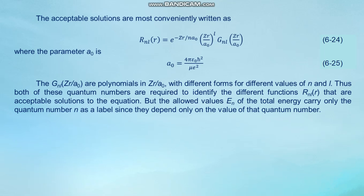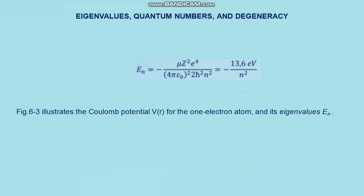Eigenvalues, quantum numbers, and degeneracy: one of the important results of the Schrödinger theory of the one-electron atom is the prediction of formula 6.22 for the allowed values of total energy of the bound system. Comparing this prediction for the eigenvalues E_n with the prediction of the Bohr model, we find that identical allowed energies are predicted by both treatments, both in excellent agreement with experiment. Schrödinger's derivation of 6.22 provided the first convincing verification of his theory of quantum mechanics.